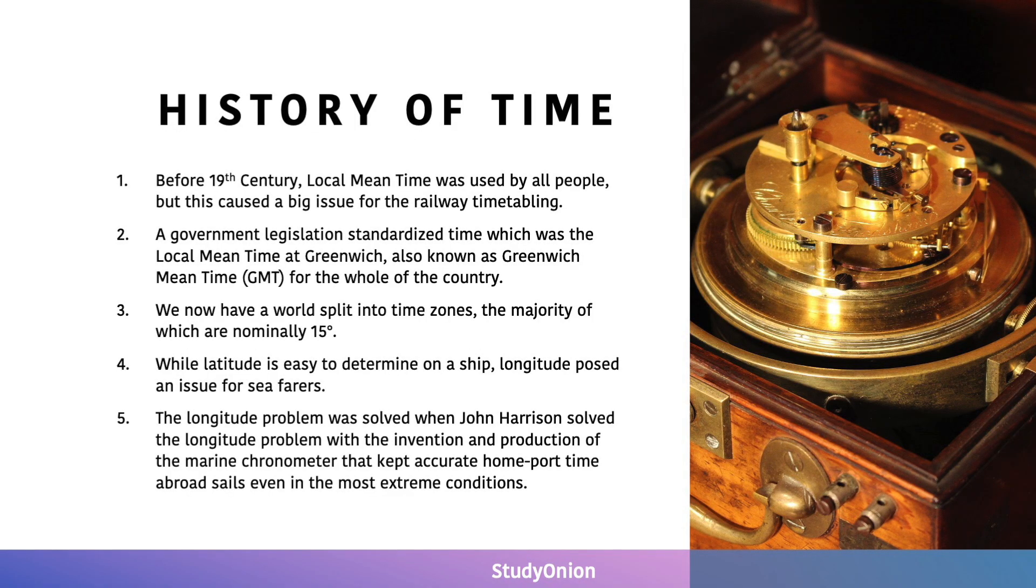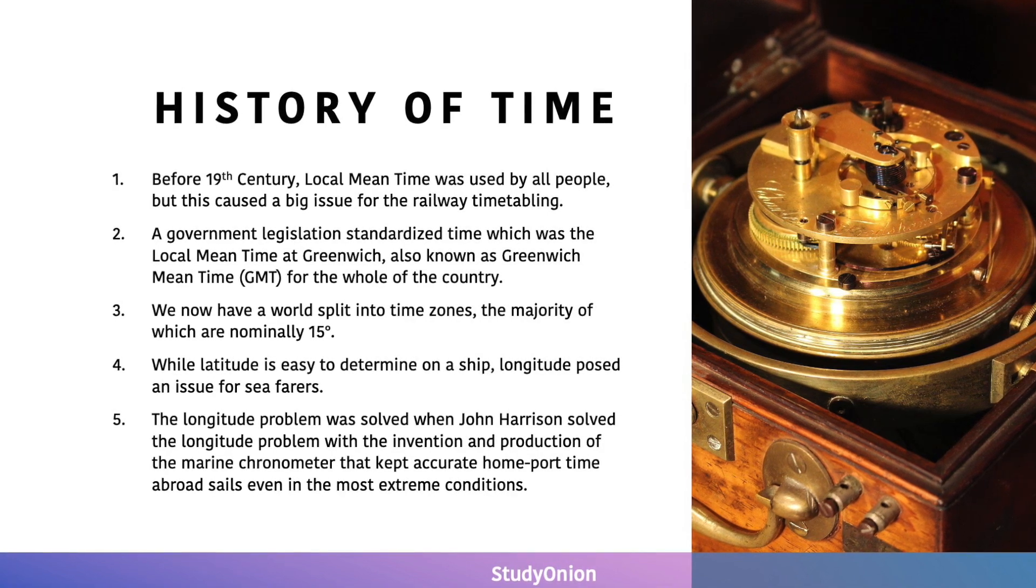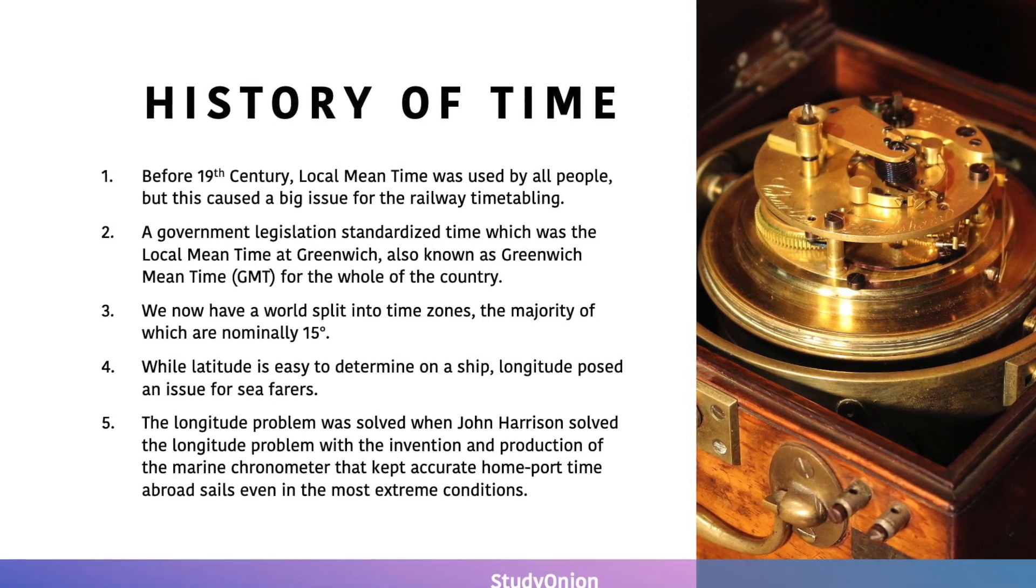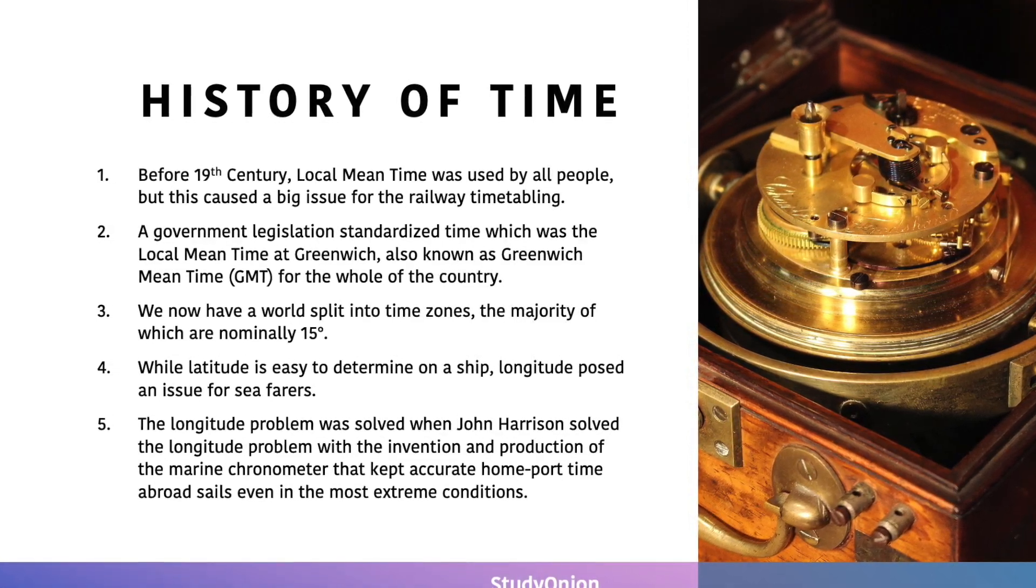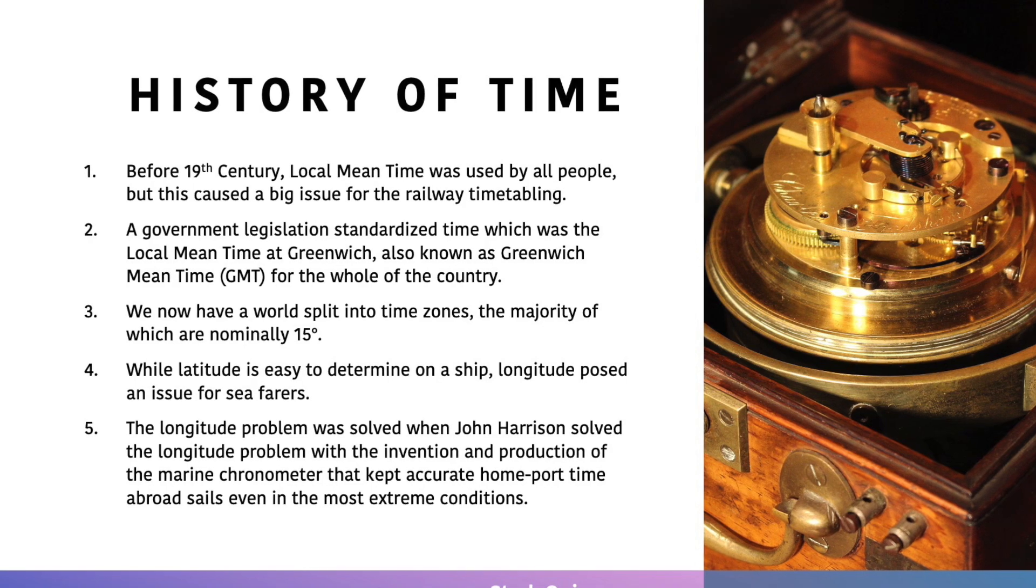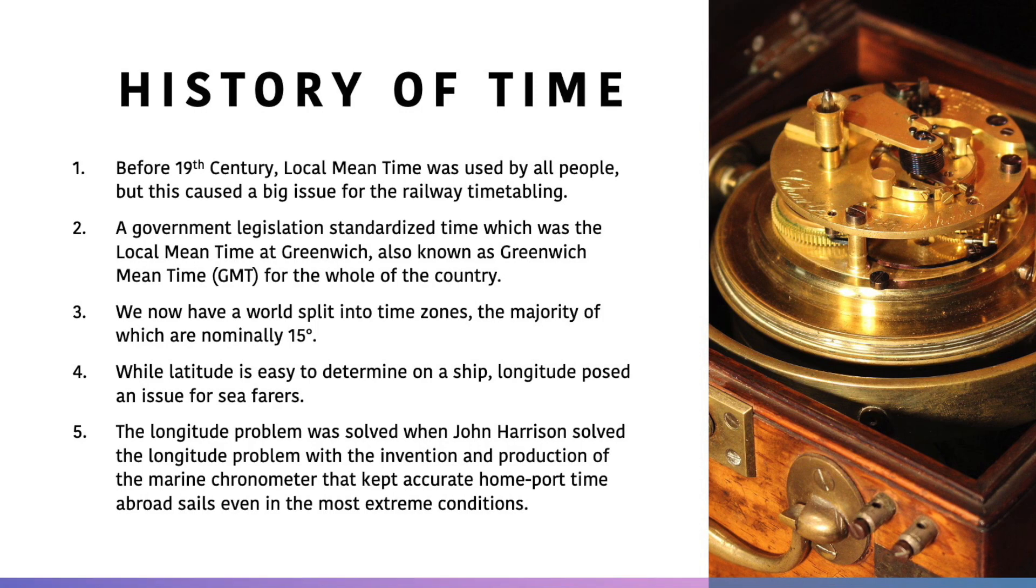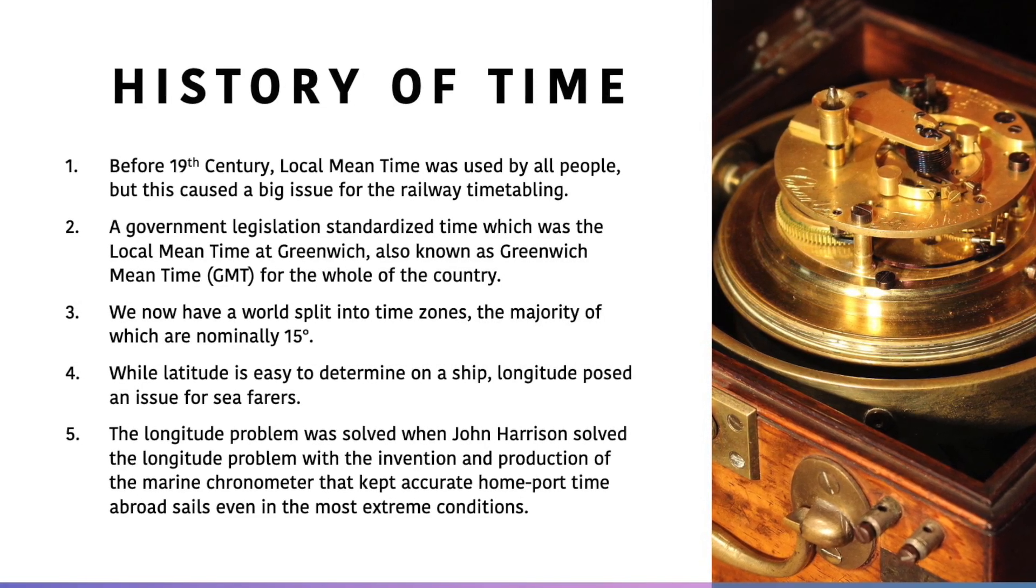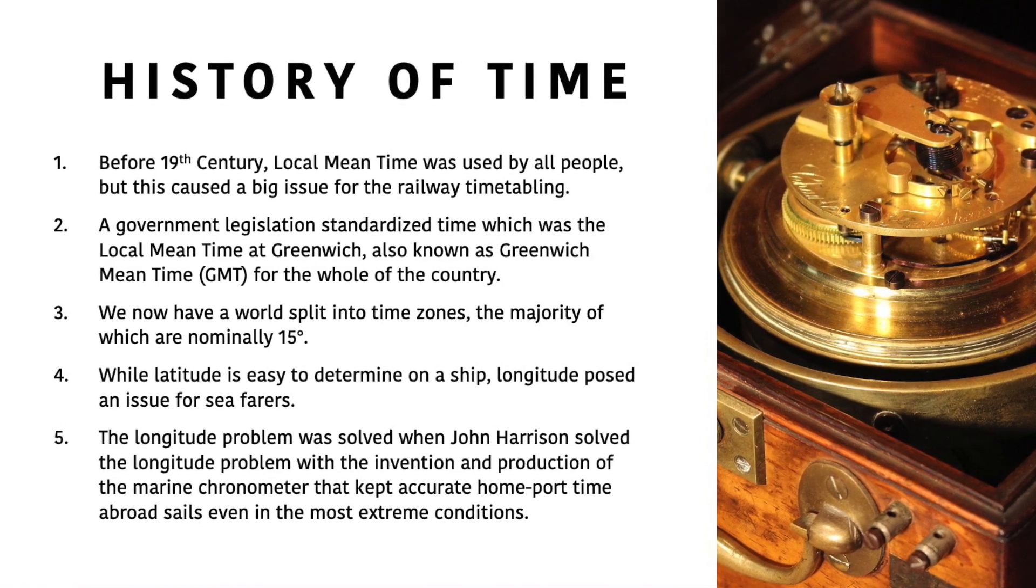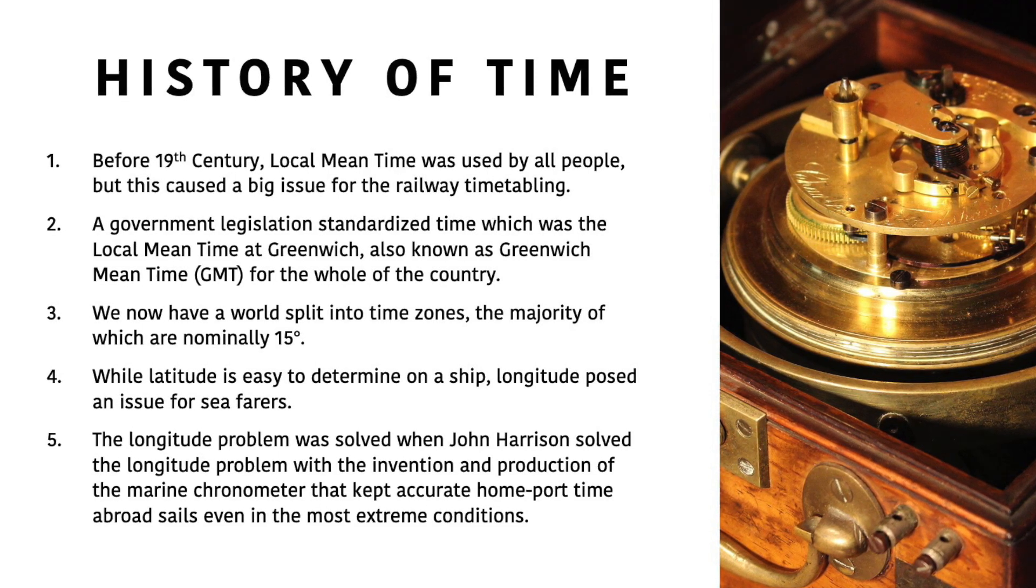Before the 19th century, local mean time was used by everyone, but this caused a big issue for railway timetabling. A government legislation had to standardise time, which was standardised to be the local mean time at Greenwich, also known as Greenwich Mean Time for the whole of Britain. We now have a world that's split into time zones which increment in 15 degrees. While latitude is slightly easier to determine on a ship than longitude, longitude poses a big issue for seafarers. However, this longitude problem was solved by John Harrison when he invented and produced the marine chronometer that kept accurate home port time, even in the most extreme conditions, on a ship.